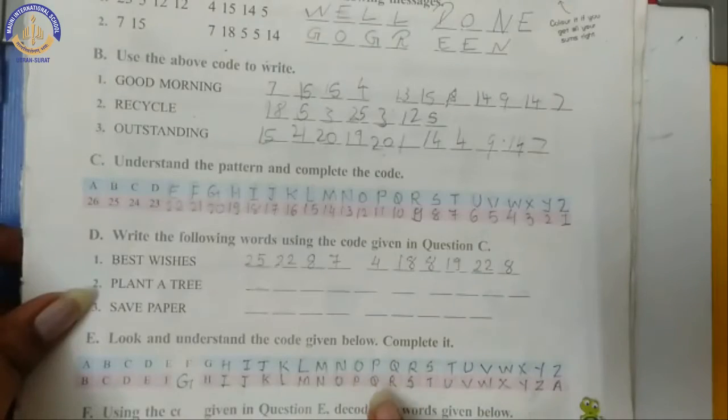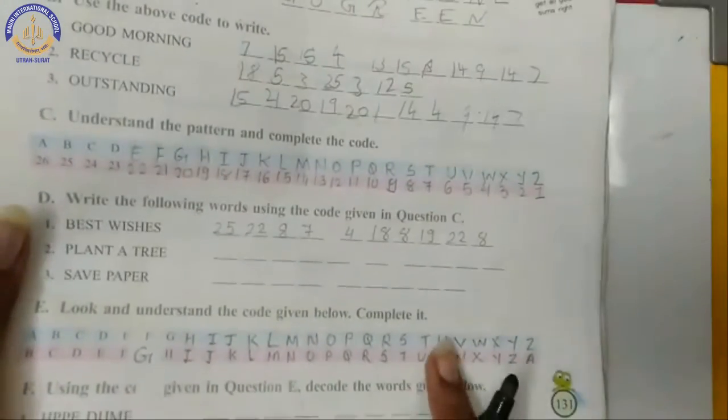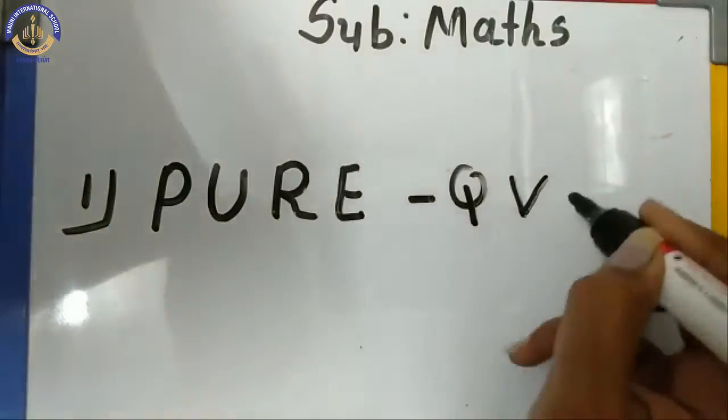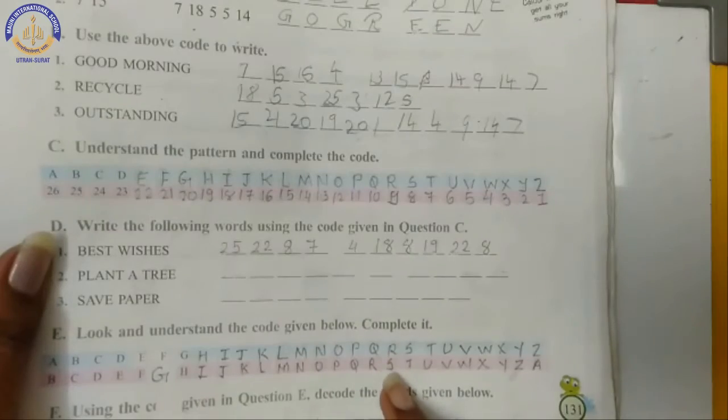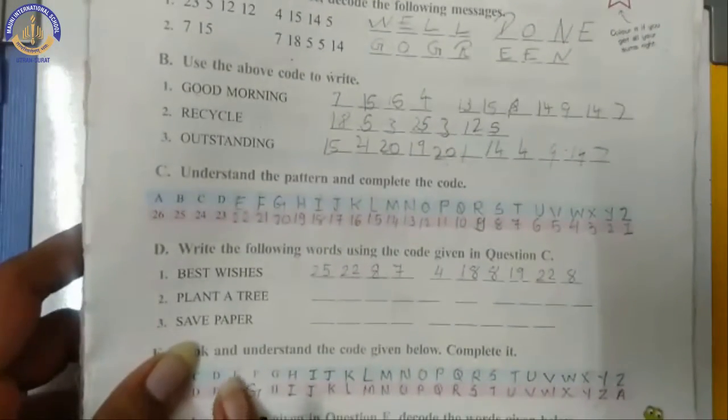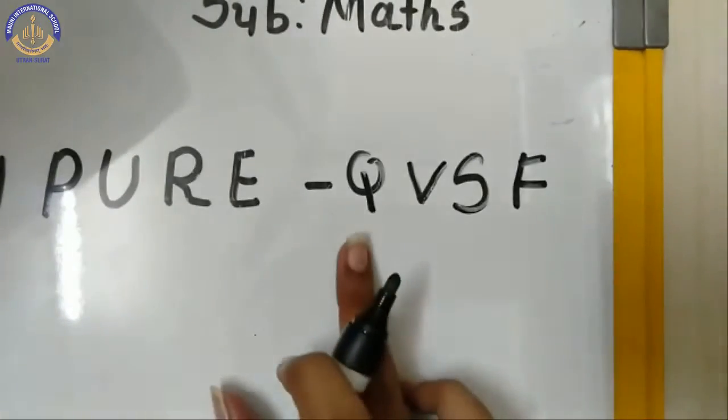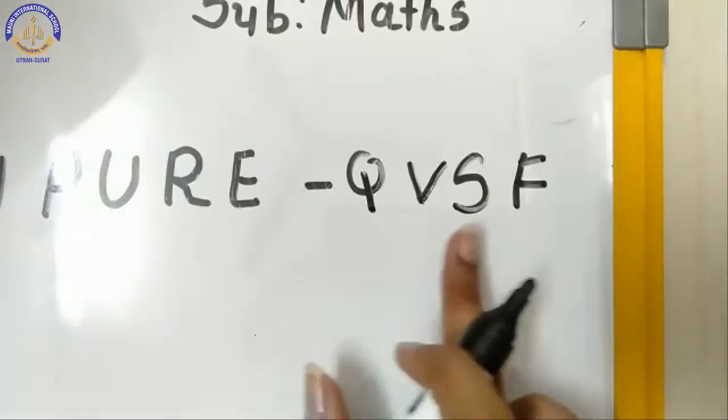P... Q... U... V... Q के नीचे कौनसा लेटर है S, तो right here S and E, E के नीचे कौनसा लेटर है children, E के नीचे है F, तो right here F. So our code is QVSF, QVSF.